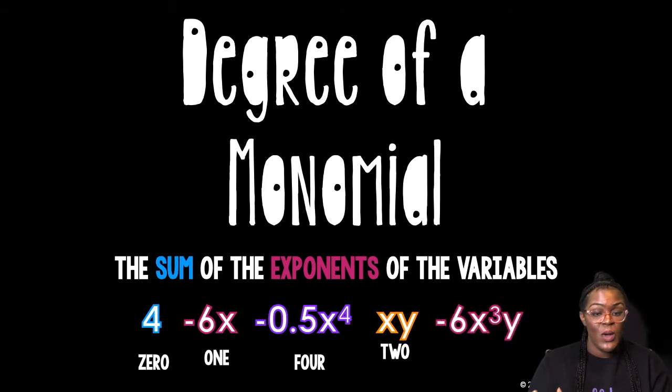We're getting a little tricky. Negative 6x cubed y. What's the variables? X, y. What are the exponents on the x? A 3. The exponent on the y is a 1. How many all together? 4. Ta-da! That's how you find the degree of a monomial.